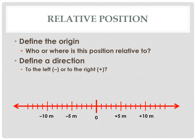Next we need to define a direction. Oftentimes we're going to say left is going to be negative and right is going to be positive. Now this is referred to as a convention. There's nothing in nature that says that left has to be negative and right has to be positive, but as scientists we agree on this so that in our equations when we get negatives and positives we all agree on what direction that is.